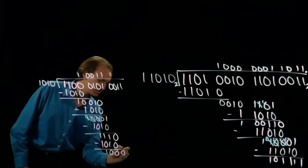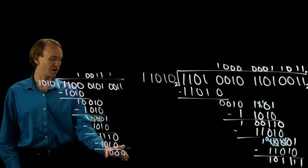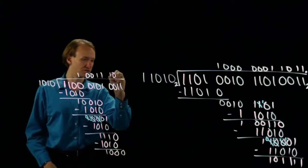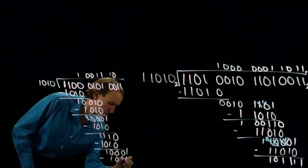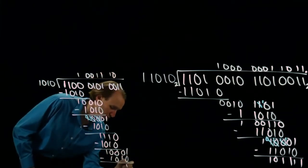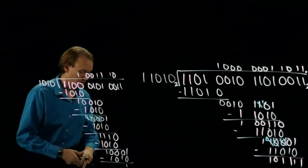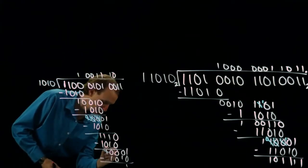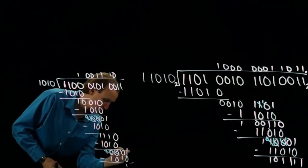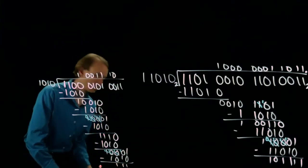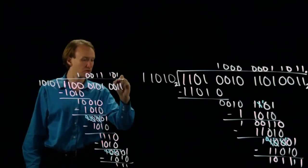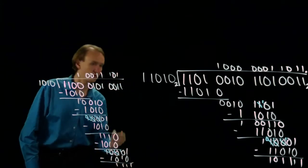I'll pull down a zero. Now this four-bit binary number is smaller than this one. So I'll write down a zero and pull down another bit.